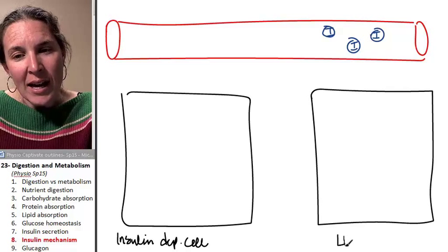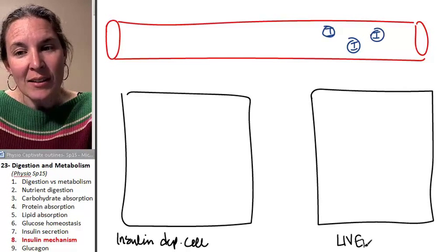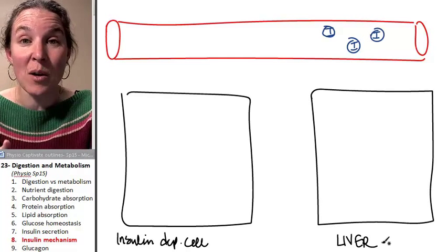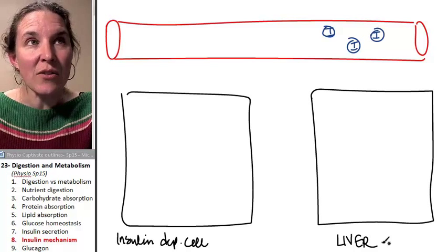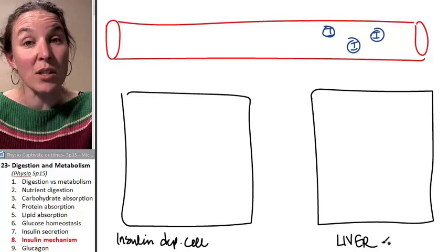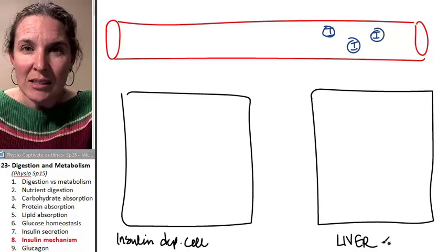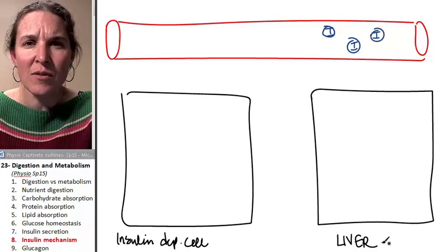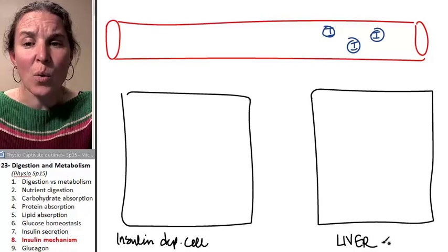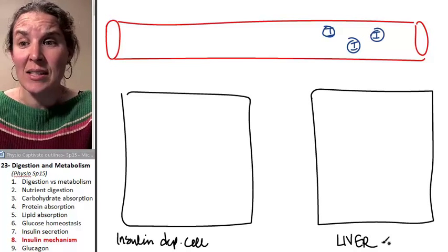The other cell that I want to look at is a liver cell, and the liver has a different mechanism that we're going to examine because the liver has a different function when it comes to glucose. In fact, glucose is stored in the liver in the form of glycogen. So we have to figure out how that's going to happen.